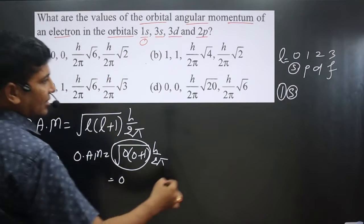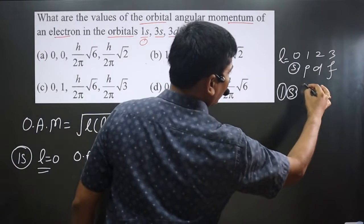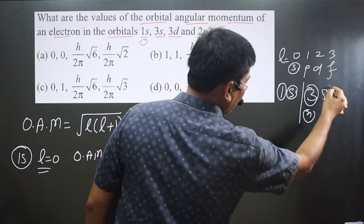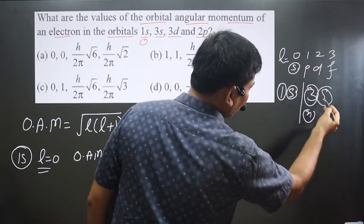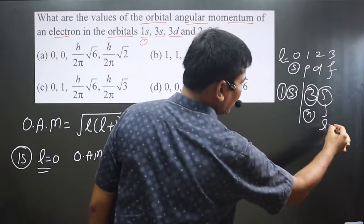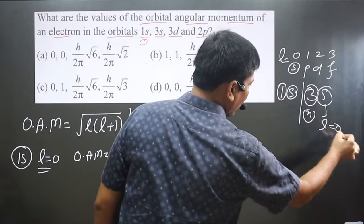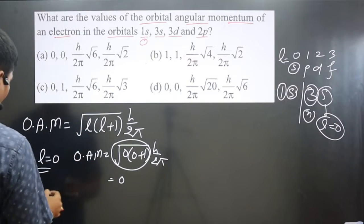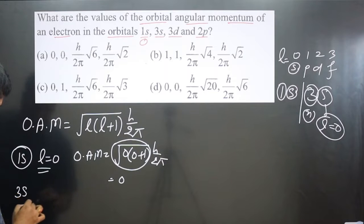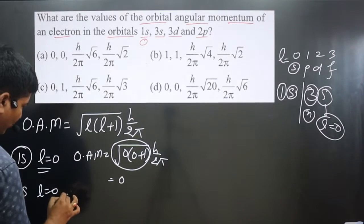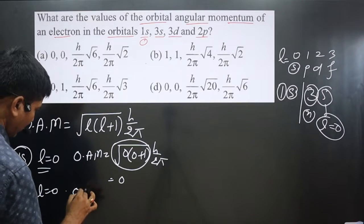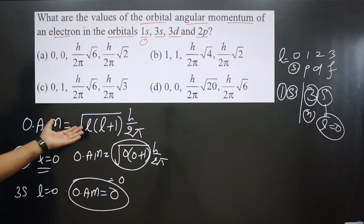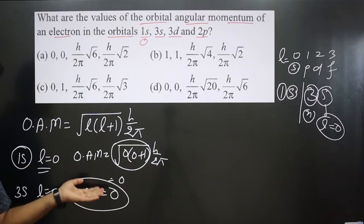Next we have 3s. Here '3' is the n value, and since it is an s orbital, l = 0 again. Applying the formula with l = 0, the orbital angular momentum is also 0, same as for 1s.